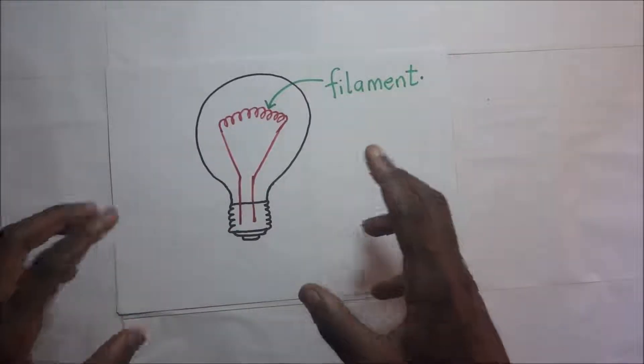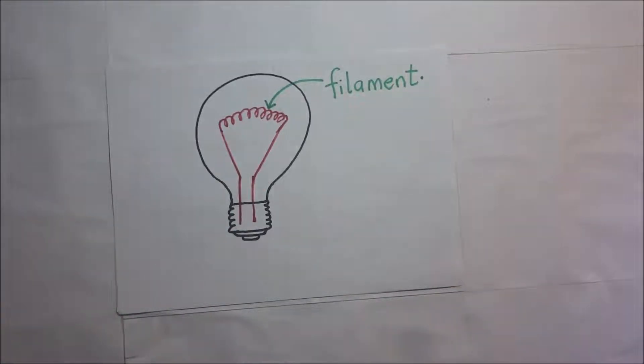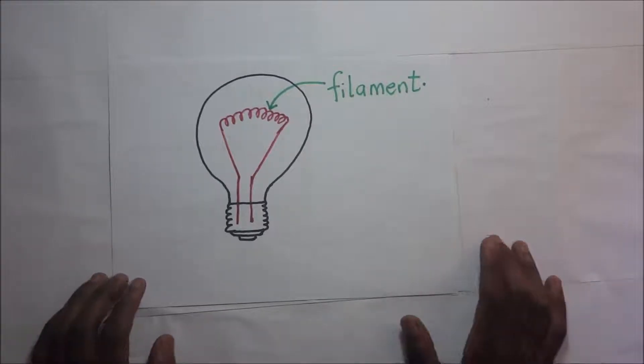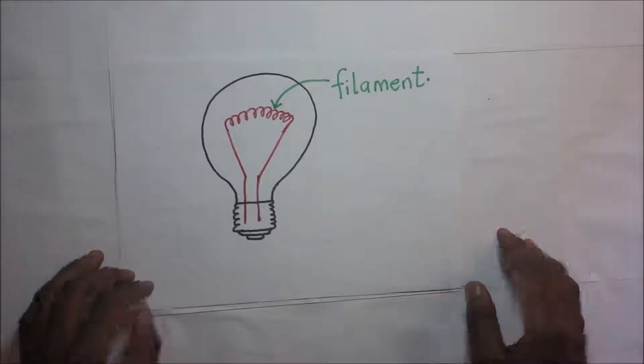So when it glows, this heat energy is converted into light energy. That is how the light is produced. So coming up is the voltage-current relationship for the bulb filament.